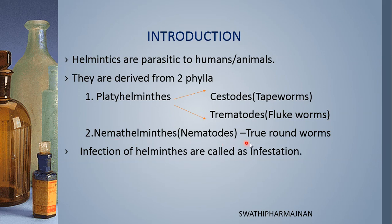Nematihelminthes or nematodes are called as true roundworms. Tapeworms are like cello tape in size. Flukeworms are like pin or hook-like shape. True roundworms are in round shape.